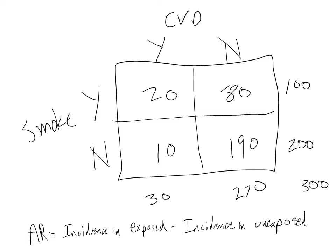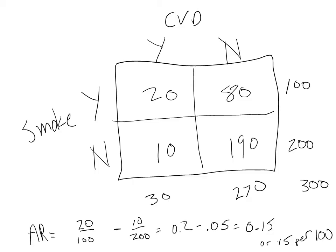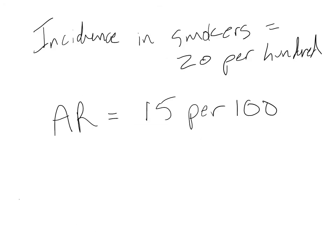Now, let's look at our 2x2 table. Our attributable risk in smokers is the incidence among smokers minus the incidence among non-smokers. The incidence in smokers is 20 divided by 100, and the incidence in non-smokers is 10 divided by 200. So our attributable risk among smokers is 15 per 100. Our total incidence of cardiovascular disease among smokers is 20 per 100, and our attributable risk tells us that 15 out of these 20 cases is attributable to smoking.